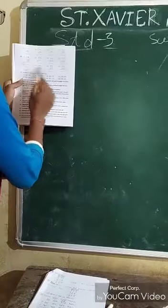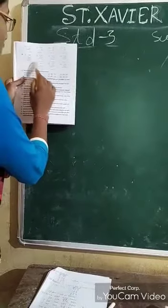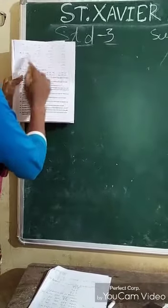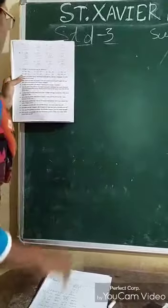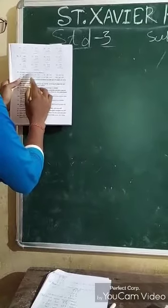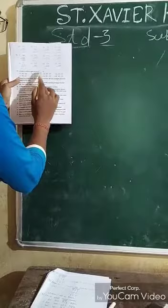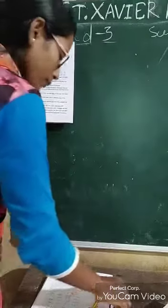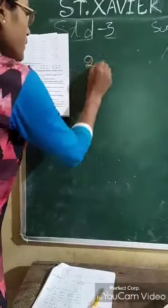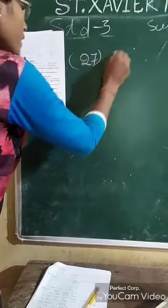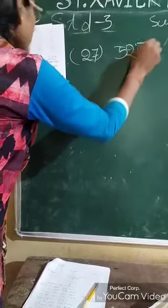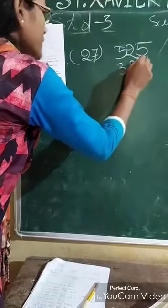Number 26: here is the subtraction. Next, number 27: arrange in columns and find the difference — that means subtraction. Number 27: 525 minus 386.